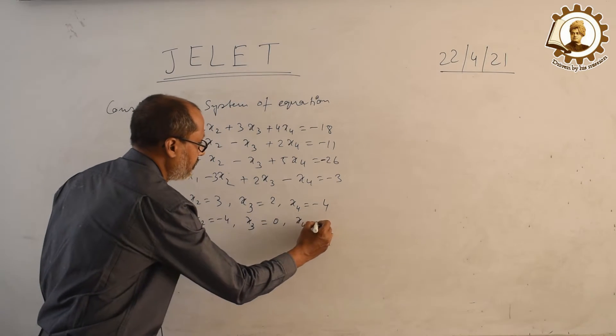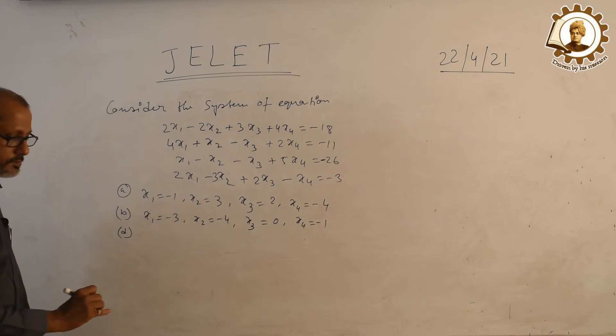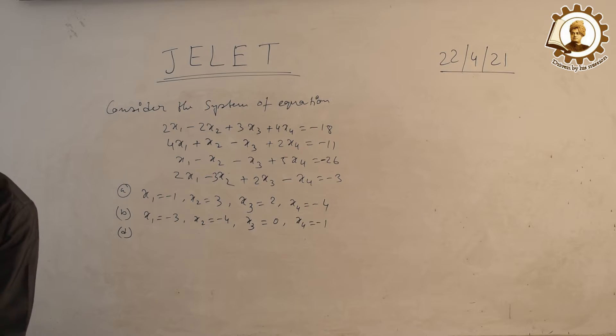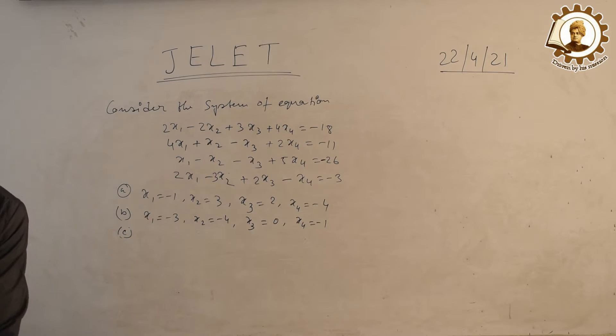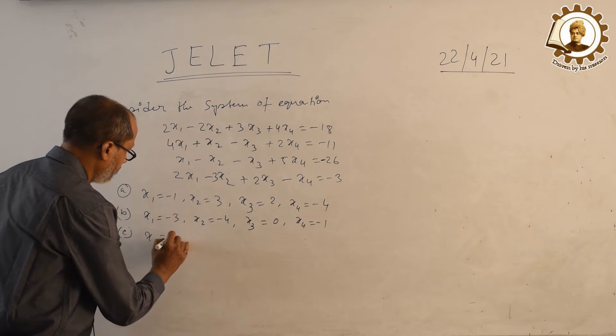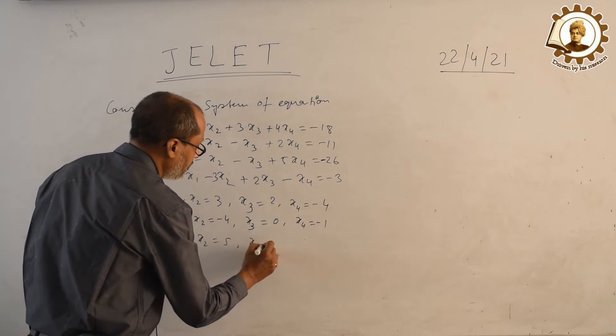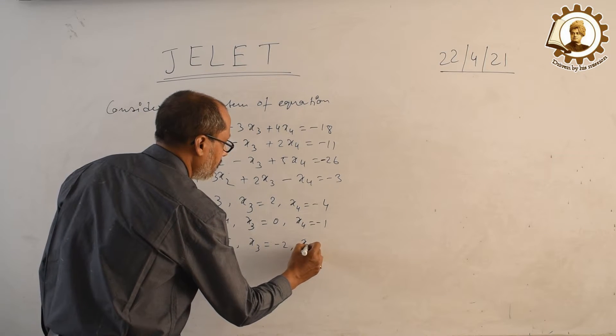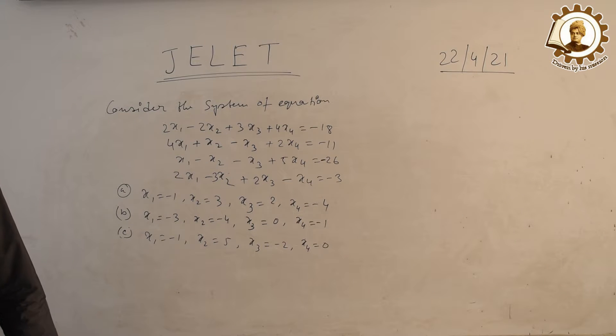Option C: x1 equals minus 1, x2 equals 5, x3 equals minus 2, x4 equals 0. Option D: x1 equals 0, x2 equals 0, x3 equals minus 6, x4 equals 0.